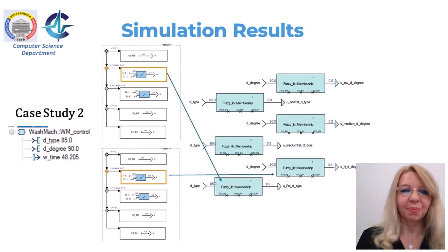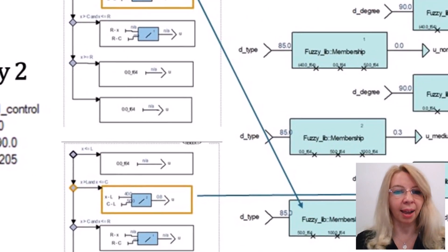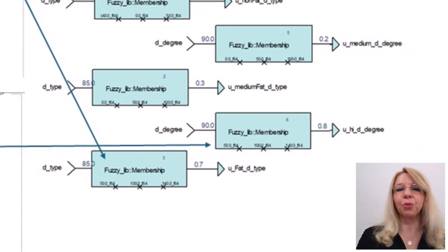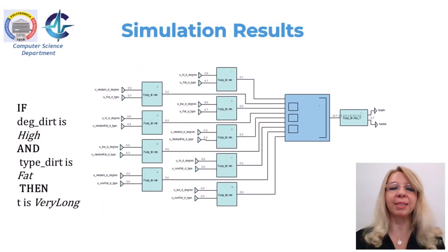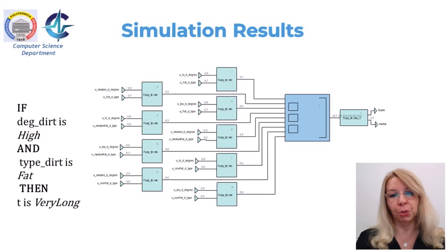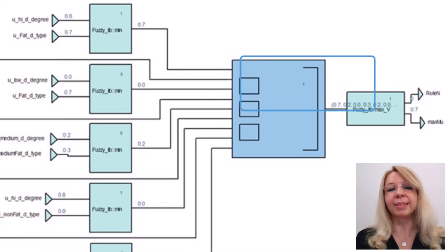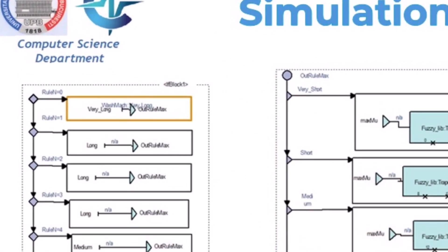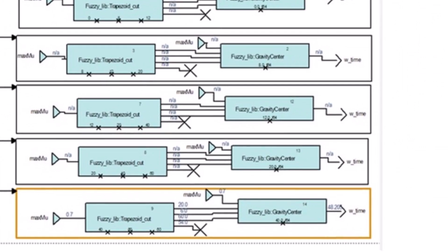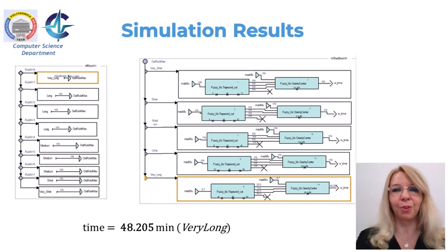In the second case study, with degree of dirtiness 90 (high) and type of dirtiness 85 (fat), the membership functions for dtype and ddegree are calculated. In this case, we obtain rule 0: if degree of dirtiness is high and type of dirtiness is fat, then the time is very long. The output gives a washing time of 48 minutes, which belongs to the very long output fuzzy set.